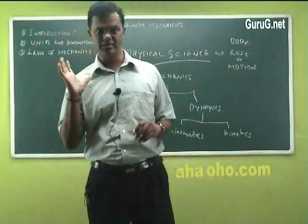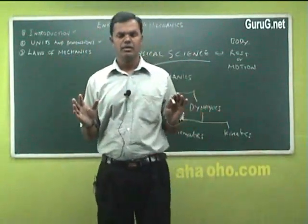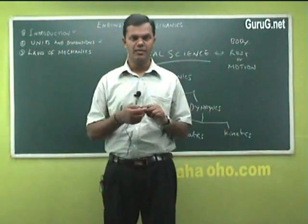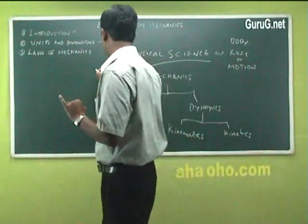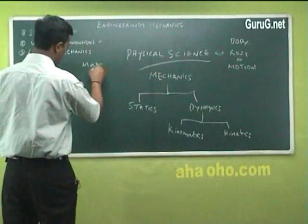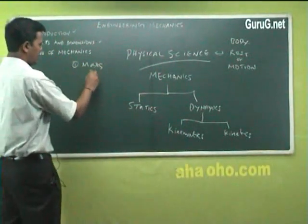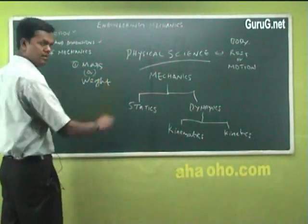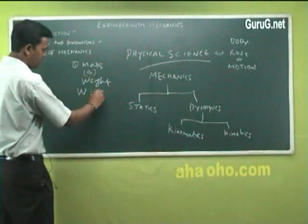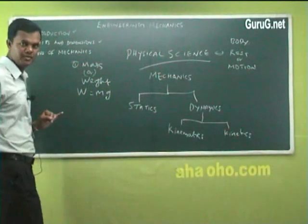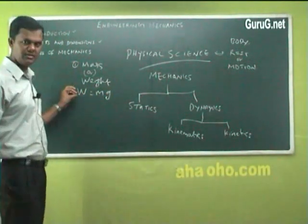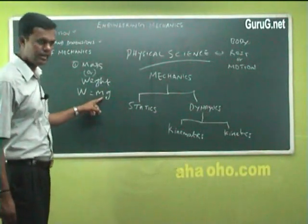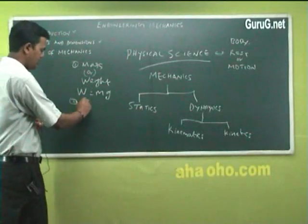For any object, particle, or body, the first thing you need is mass. Basic physics tells us: weight equals mass times acceleration due to gravity — W = m × g — where g is the acceleration due to gravity. So the first fundamental quantity is mass, and next comes time.